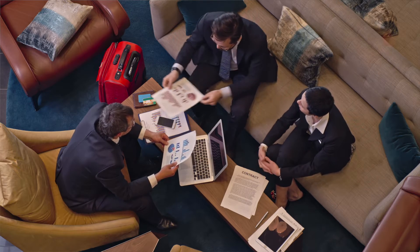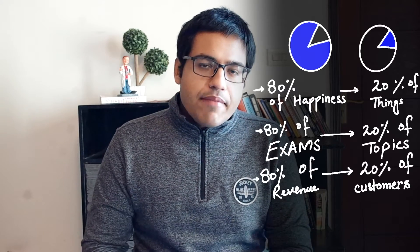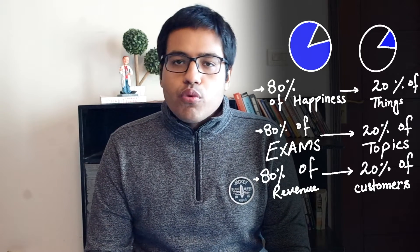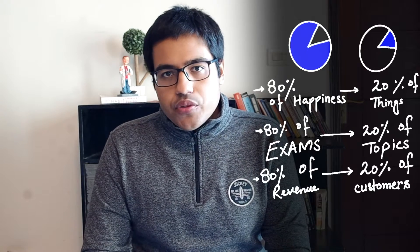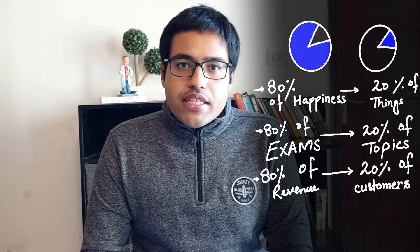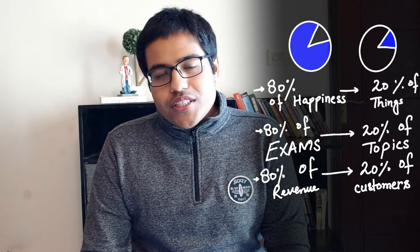Tim Ferriss observed that in his businesses, only 5 or 6 customers accounted for 80% of revenue, while the rest gave less. He says we should apply this principle to identify what is important and what is not. If you look at the three-star topics in your syllabus, that 20% will cover 80% of the exam. You can apply this phenomenon throughout your life.